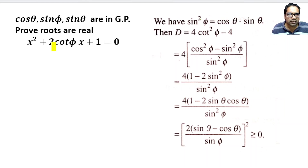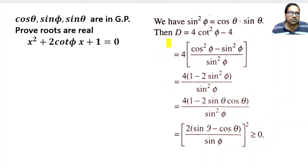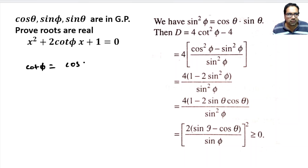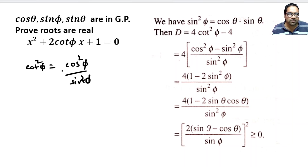What is our determinant? That is b² - 4ac. Here b is 2cot φ, so b² is 4cot²φ, minus 4 × 1 × 1. This should be greater than or equal to 0. Now, cot φ = cos φ / sin φ, so cot²φ = cos²φ / sin²φ. So 4cot²φ - 4 equals 4 times (cos²φ / sin²φ - 1).